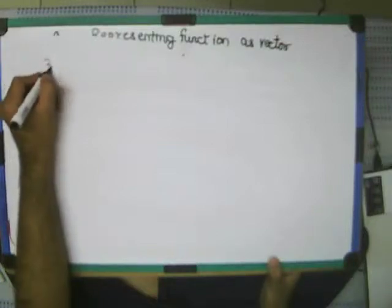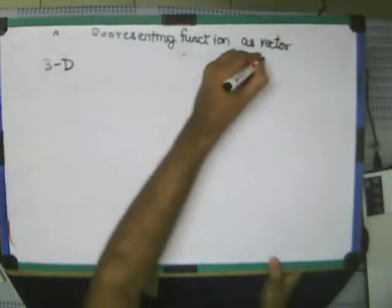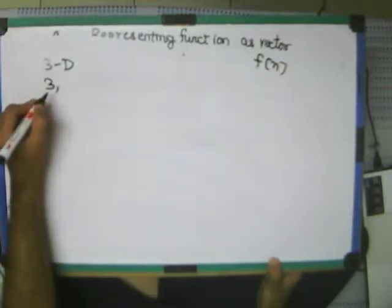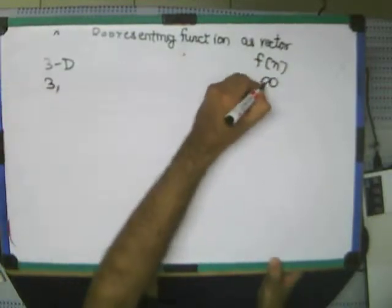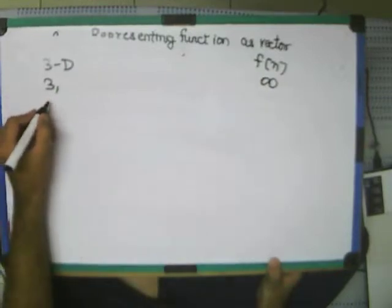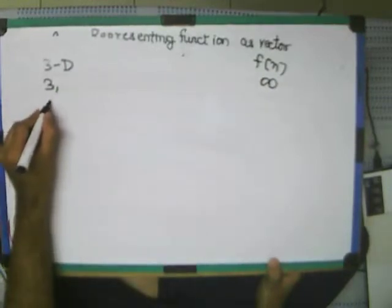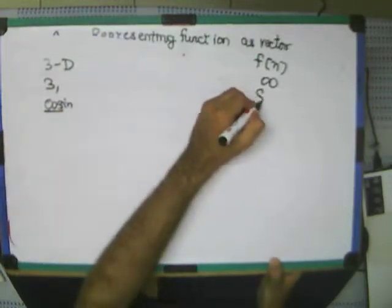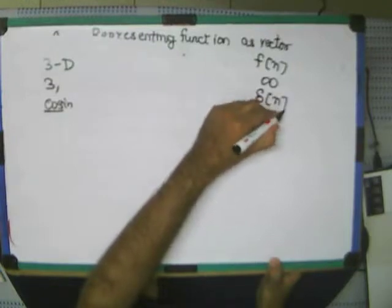Just to recap, what is the analogy between 3 dimensions and this function f(n)? It has 3 dimensions versus infinite number of dimensions. The selector function in 3D is cosine. Here, delta(n) is the selector function.